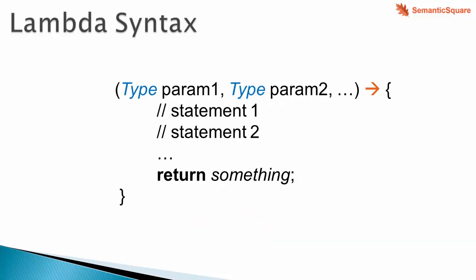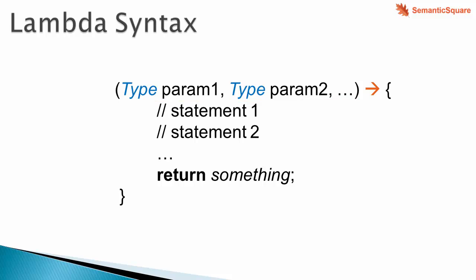Here is the syntax for a lambda expression in Java. The expression begins with the function parameters inside parentheses — these are the parameters of the anonymous function. Next, the parameter list is followed by the arrow symbol, which is then followed by the function's body. Just like any method, the body can have multiple statements, and the last statement would be the return statement unless the function is not expected to return anything.